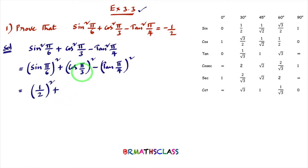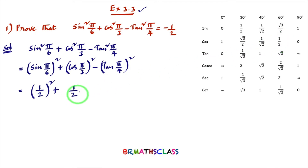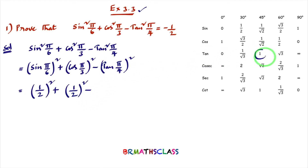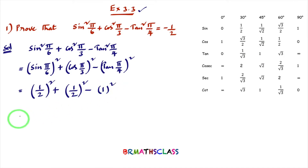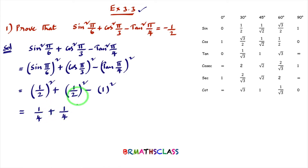Plus cos(π/3) — π/3 means 60°, and cos 60° = 1/2 — so (1/2)². Minus tan(π/4): the value of tan(π/4) is 1, so we write 1². Now (1/2)² is 1/4, so we have 1/4 + 1/4 − 1. The LCM is 4.